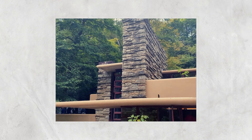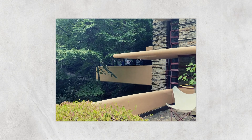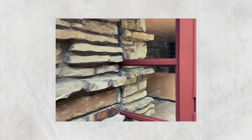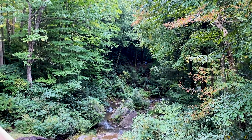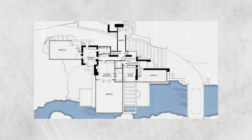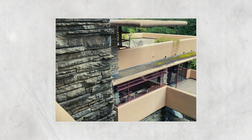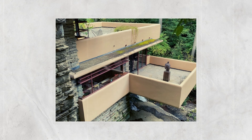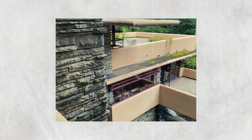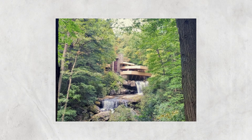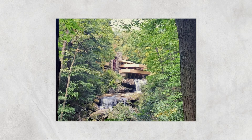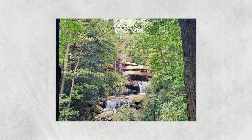Fallingwater's design incorporates a series of organic shapes and materials including stone, wood, and water to further emphasize the harmony and integration with the natural world. The building's interior spaces are carefully calibrated to create a sense of flow and movement, ensuring that the building appears unified as a whole rather than a collection of separate parts. Frank Lloyd Wright created a masterpiece of architectural design that continues to inspire young and emerging architects more than 80 years since its construction.